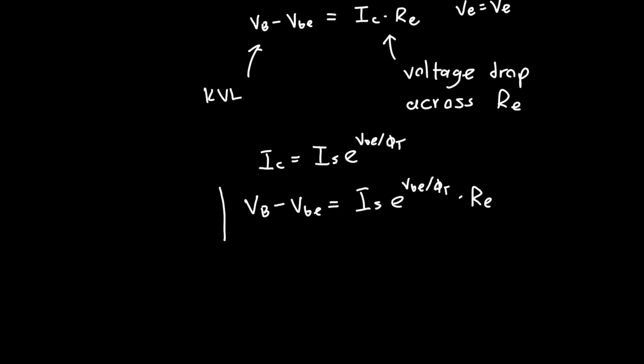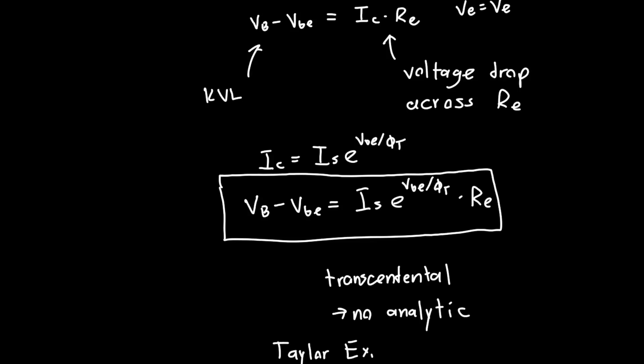And now what do we do? We've got this equation. Unfortunately, this is a transcendental equation. It has no analytic solution to it, and that's something we really don't like in general. So we actually have to solve this equation numerically. We can't even Taylor expand it unless we get really creative with the algebra because VBE over phi T is much greater than one.